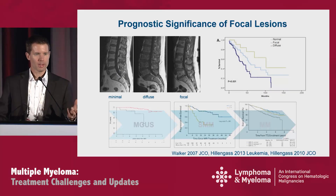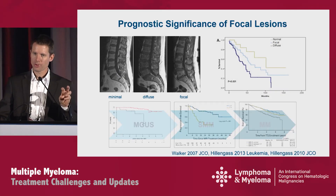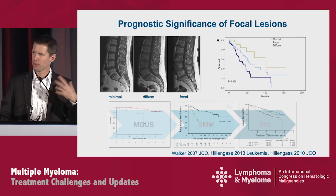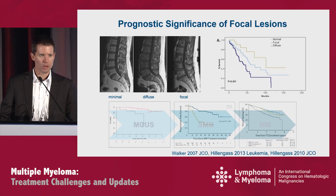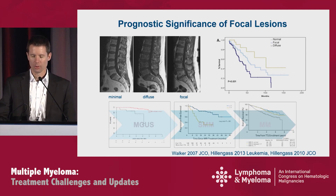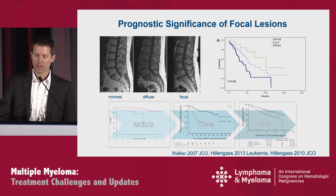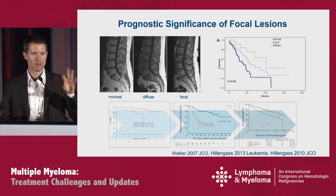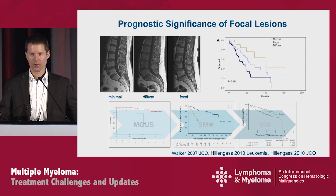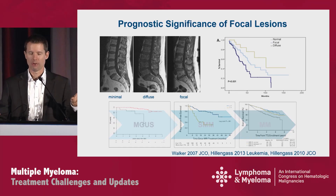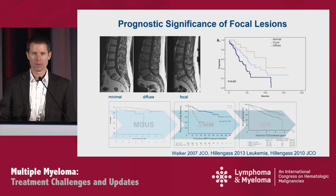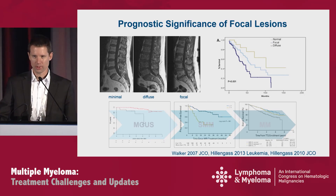Regarding the prognostic significance of tumor burden: myeloma can grow focally, so we can count focal lesions and measure them. We don't have to measure all of them, because many myeloma patients — especially at first diagnosis or in later relapses — have a lot of focal lesions. The data shows that in every stage of disease, more focal lesions means worse outcomes. Whether in MGUS, smoldering myeloma, or multiple myeloma, higher tumor burden is not a good prognostic sign.